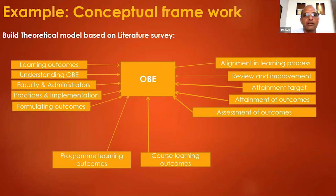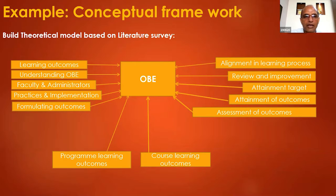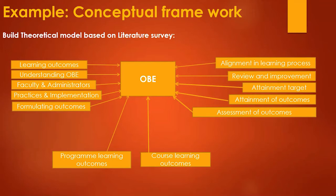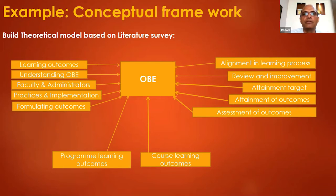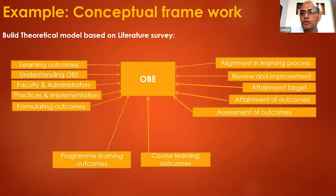Look at an example I have taken — outcome-based education. This is a theoretical model built based on literature survey, meaning knowledge which exists on outcome-based education. There are about 10 to 12 variables I have put together which actually constitute outcome-based coaching questions. There would be many more, but to reduce complexity in this framework I used only limited ones. As an individual you are free to use as many as you know.